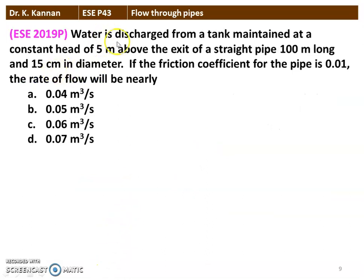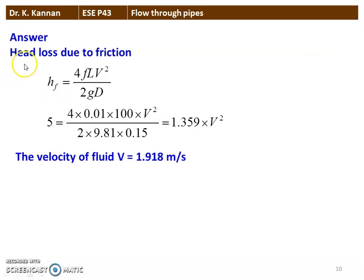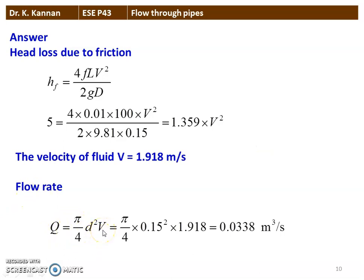The next question is from the 2019 question paper. Water is discharged from a tank maintained at a constant height of 5 meters above the exit of a straight pipe 100 mm long and 15 cm diameter. If the friction coefficient for the pipe is 0.01, the rate of flow will be nearly — the correct answer is 0.04 meter cube per second. Head loss HF = 4FLV² / 2GD = 5. Substituting F=0.01, L=100, D=0.15 gives V = 1.918 m/s. Then Q = π/4 × 0.15² × 1.918 = 0.0338 m³/s, approximately 0.04 m³/s.